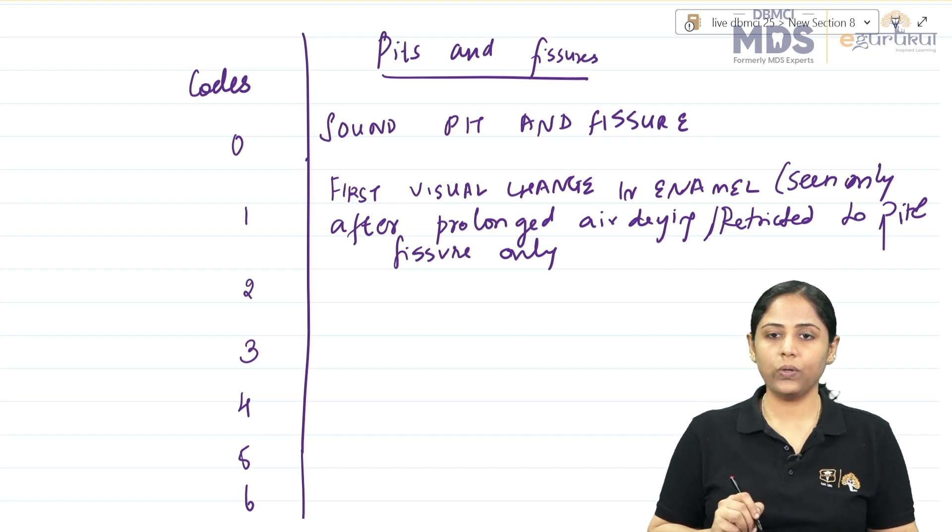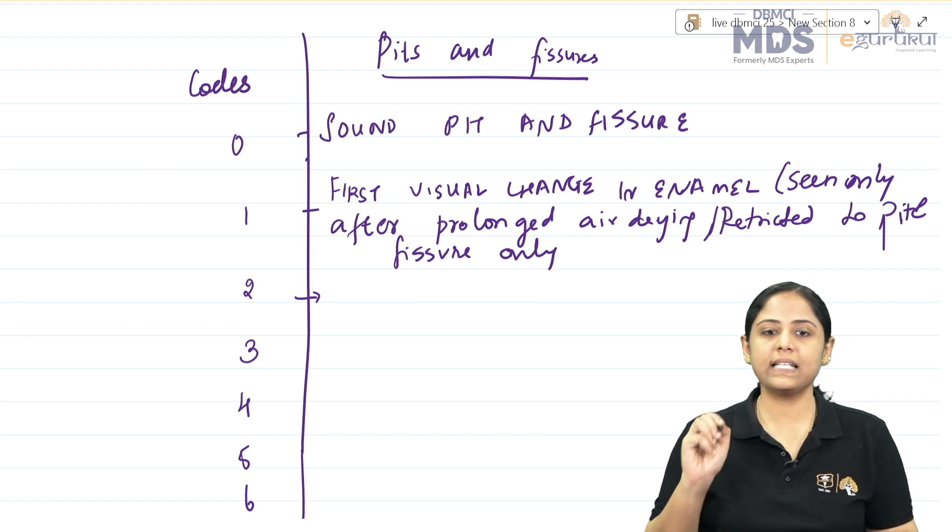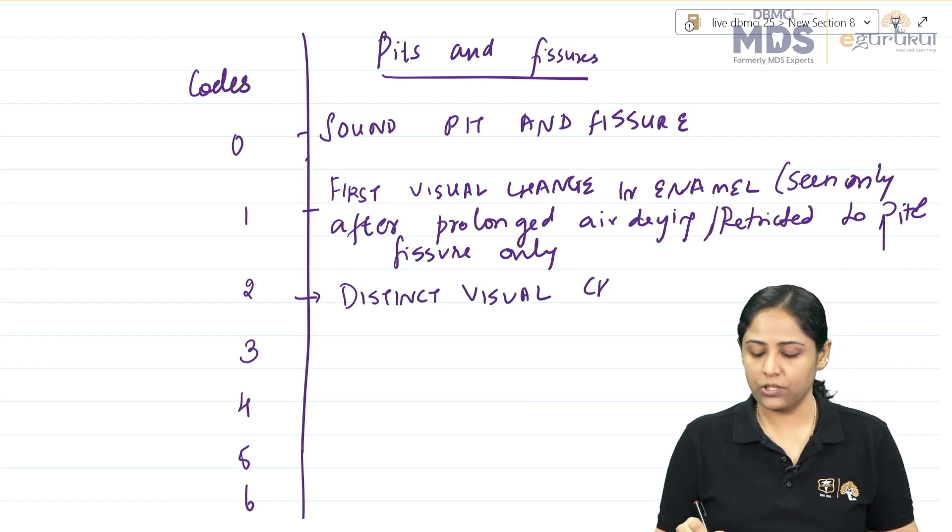Score 2 is distinct visual change in enamel.